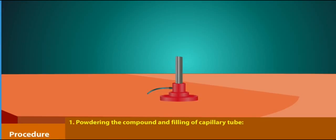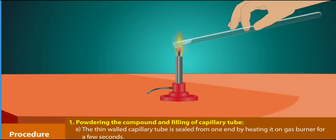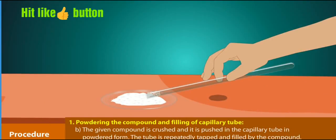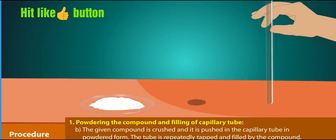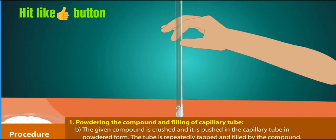Procedure - Powdering the compound and filling of capillary tube: The thin walled capillary tube is sealed from one end by heating it on gas burner for a few seconds. The given compound is crushed and it is pushed in the capillary tube in powdered form. The tube is repeatedly tapped and filled by the compound.